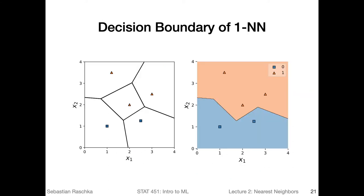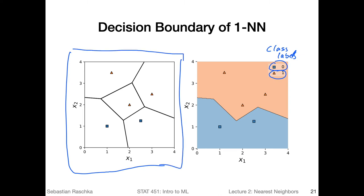We're not done yet. In the previous slide, I just showed you the decision regions given a dataset without any class labels — every point was just a dot. Now let's consider the same dataset with class labels: the triangles are class one and the squares are class zero. This is the same Voronoi tessellation as before, except now I'm also showing you the class label symbols.